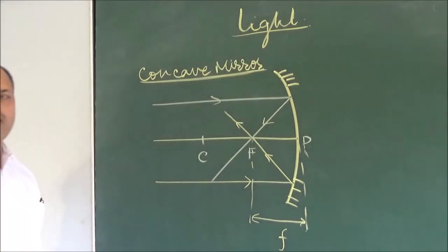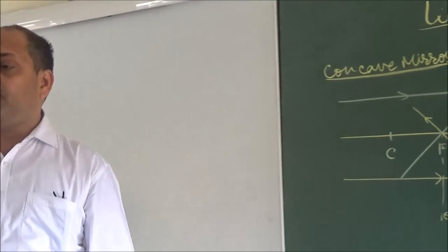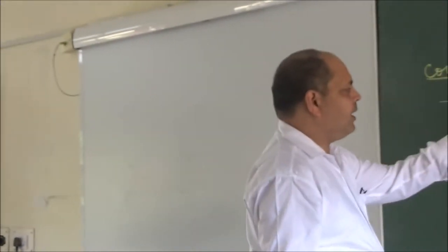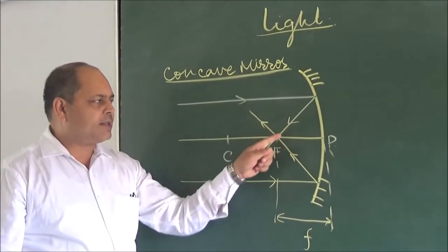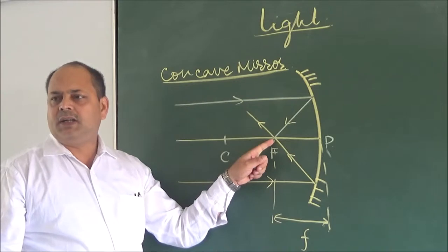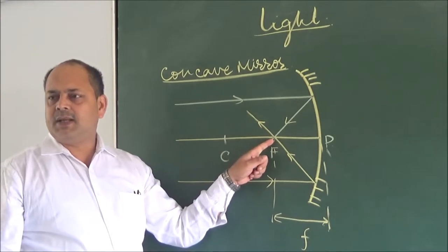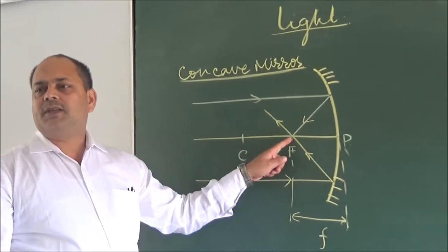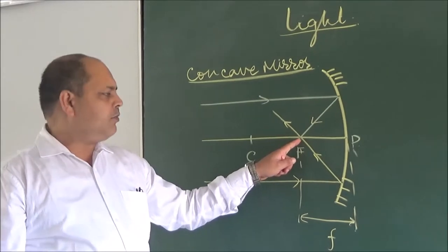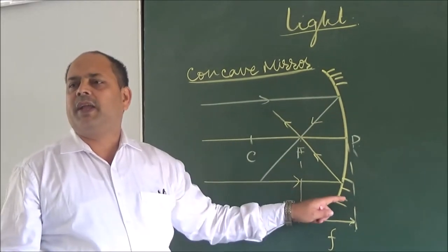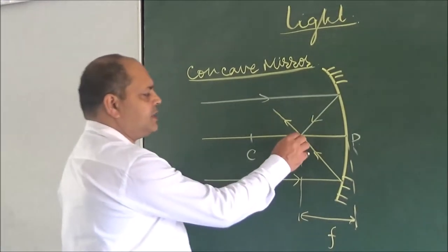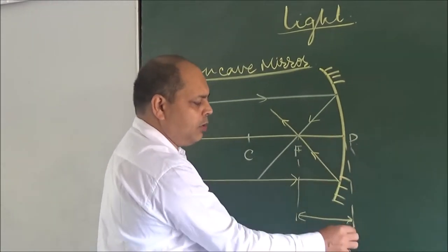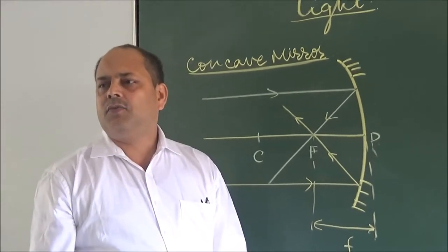So how will you define the focus of a concave mirror? All the parallel rays coming parallel to the principal axis, after reflection from the mirror, meet at a point on the principal axis. That point is known as the focal point or focus of the concave mirror. And the distance between this focus and the pole is known as the focal length.